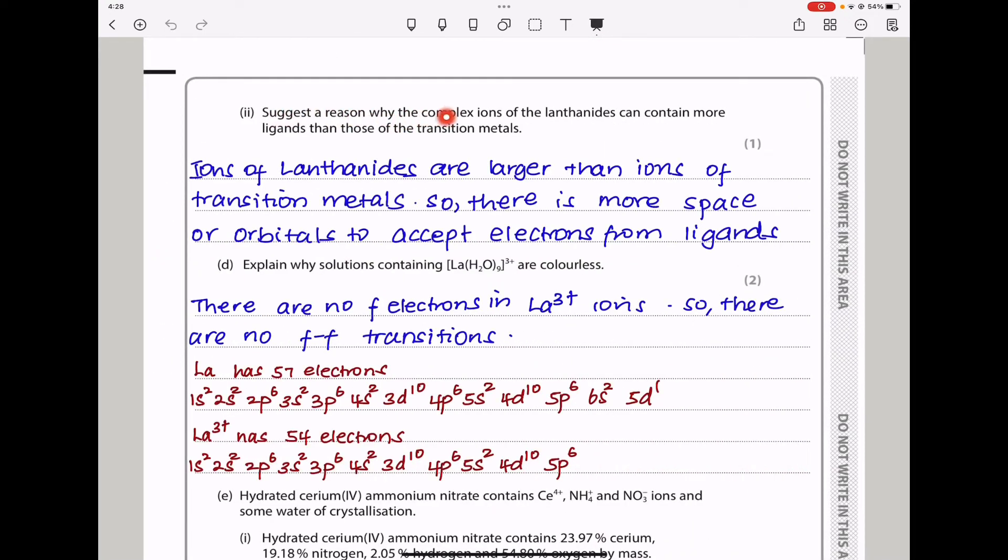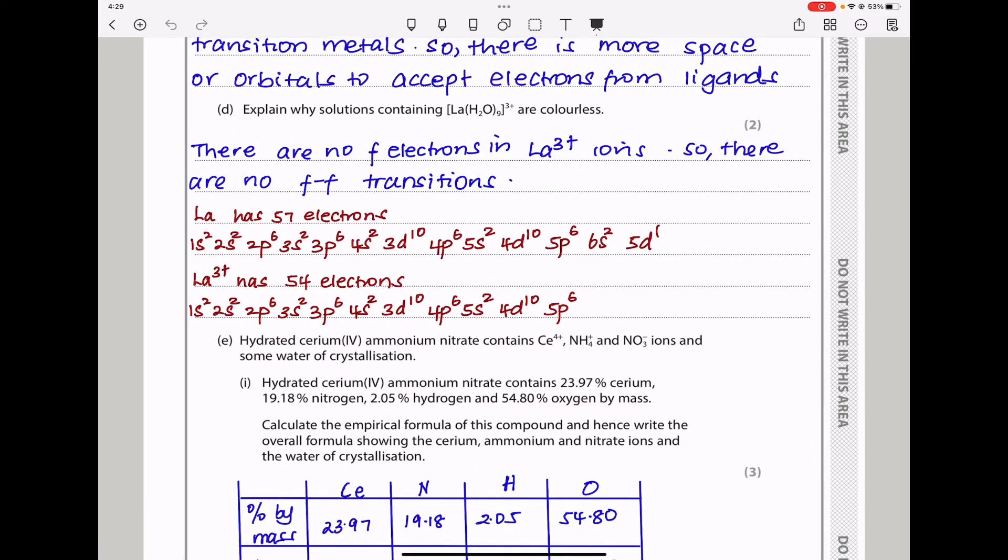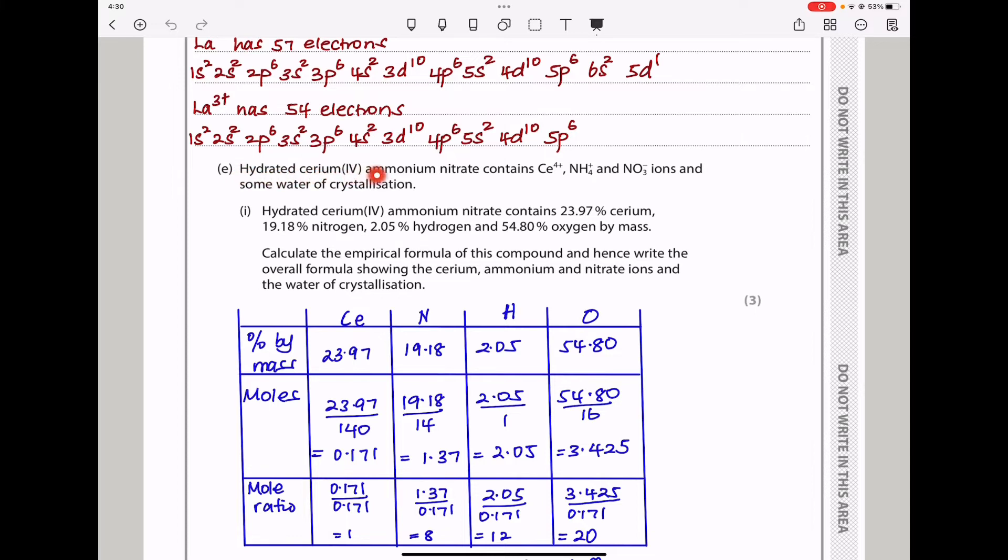Moving on. Here they say suggest a reason why the complex ions of the lanthanides can contain more ligands than those of the transition metals. This is quite easy, they are larger. You saw they contain more than six ligands so I said ions of lanthanides are larger than ions of transition metals so there is more space or orbitals to accept electrons from ligands. Part D they say explain why solutions containing that are colorless. The reason as to why these are going to be colorless is there is no f to f transitions and therefore there is going to be no color.